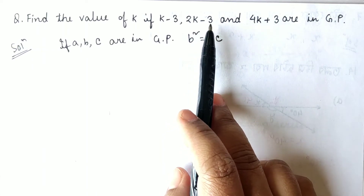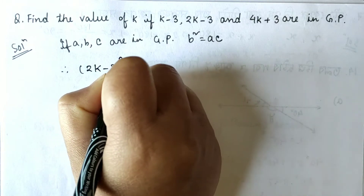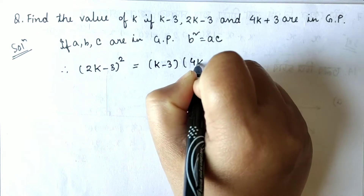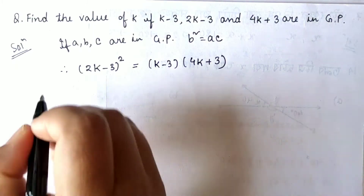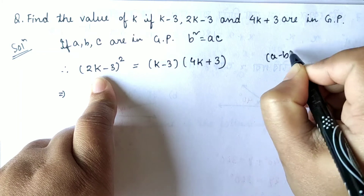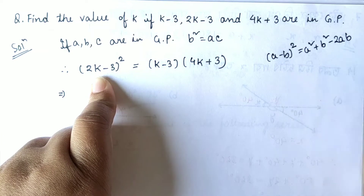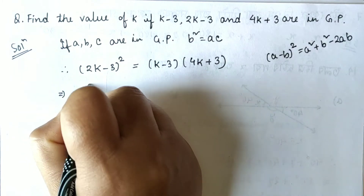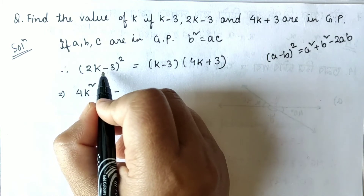Since (2k minus 3) is the middle term, we write (2k minus 3) whole square equals (k minus 3) times (4k plus 3). Expanding the left side using the identity (a minus b)² = a² + b² minus 2ab gives: 4k squared plus 9 minus 12k.